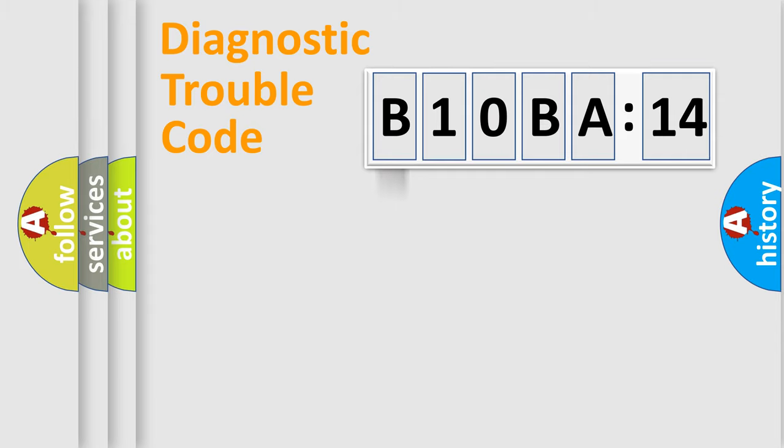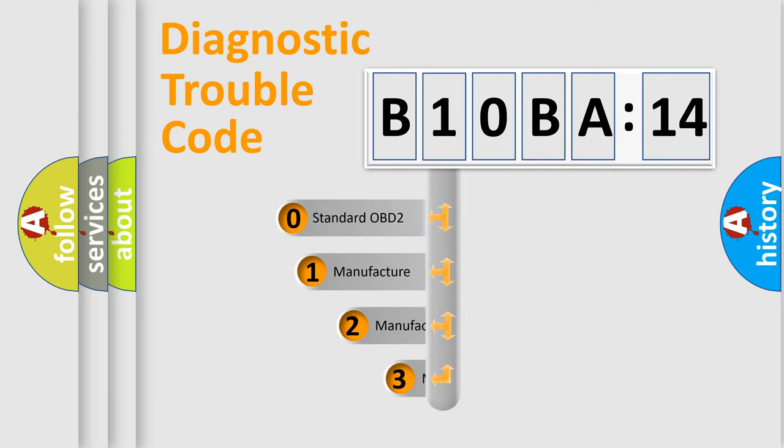Powertrain, Body, Chassis, and Network. This distribution is defined in the first character code.